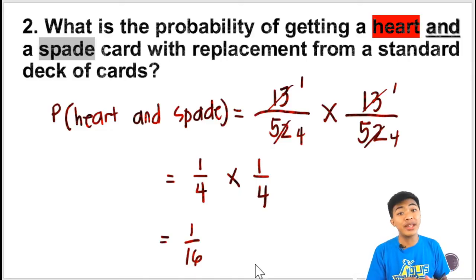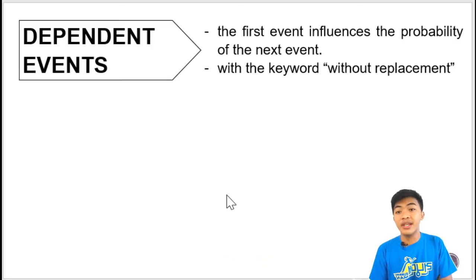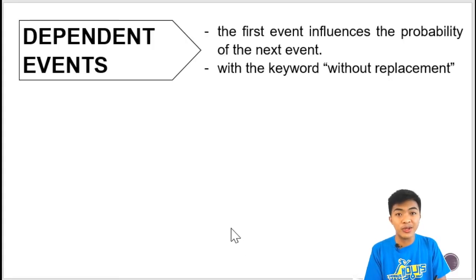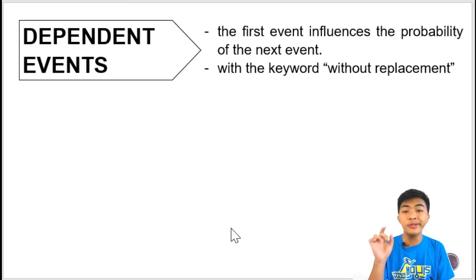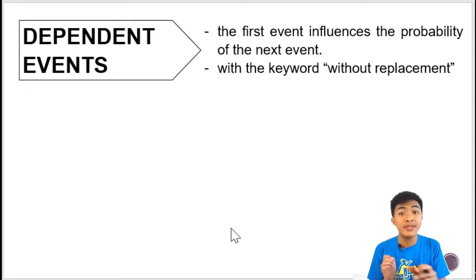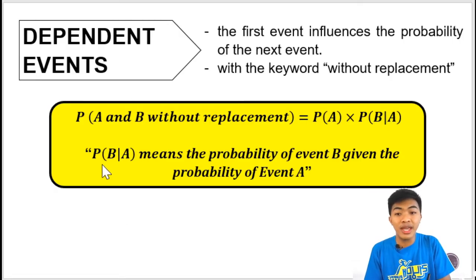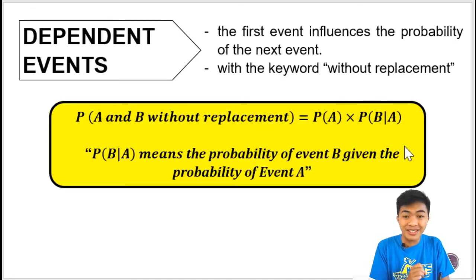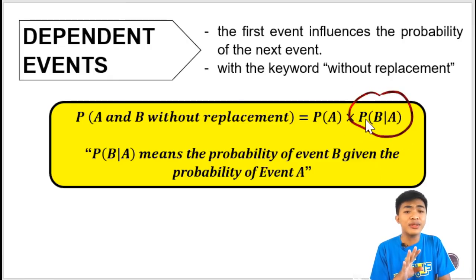I hope you understand the concept of independent events — nothing changes in the sample space. Now let's move on to dependent events. For dependent events, the first event influences the probability of the next event. It usually has the keyword 'without replacement.' The difference is that if you draw an item, you don't return it, so the total number of items in the set decreases — the denominator changes. The formula is: the probability of event A and event B without replacement equals the probability of event A times the probability of event B given event A. This means: what is the probability of event B given that event A already happened?